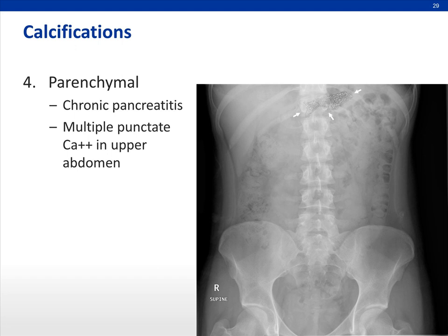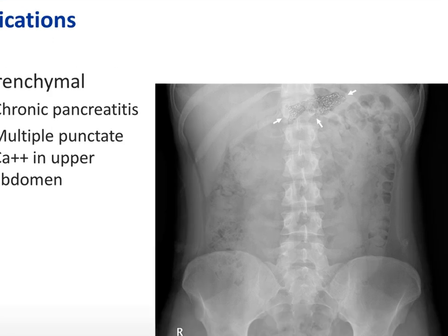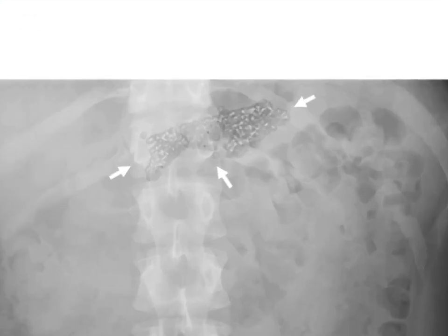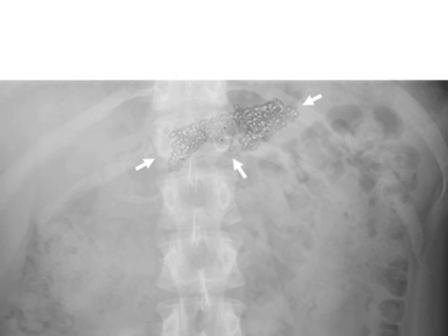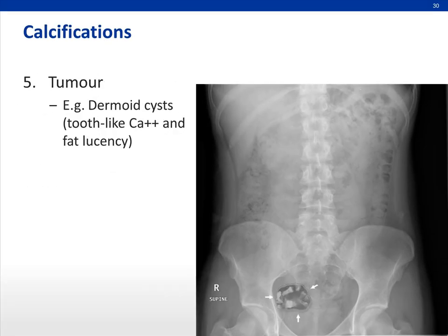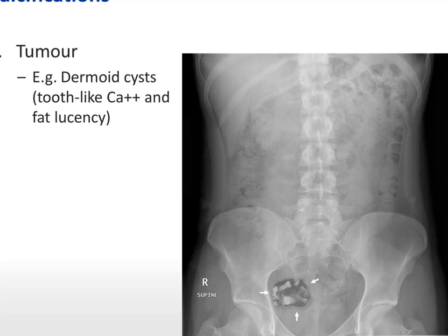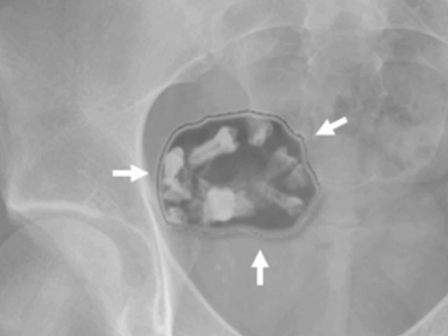We can also have parenchymal calcification. One example is chronic pancreatitis, resulting in multiple plaque-like calcifications in the upper abdomen. Tumors can also have calcification — one classic example would be a dermoid cyst, which can have tooth-like calcifications with fat lucencies. You might want to look in the pelvis because they tend to arise in the ovaries.